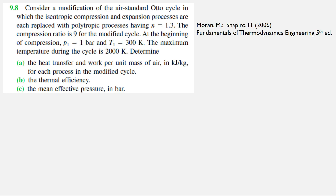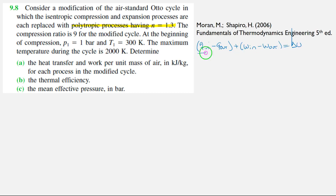We're going to have a little change. The ideal cycle that we described used isentropic processes for compression and expansion. In this cycle, what we're going to replace is the isentropic — or polytropic — process with n equal to 1.3. Recall that in an isentropic process, when we do the analysis, we see that heat transfer is zero. This will differ from zero for a polytropic process.